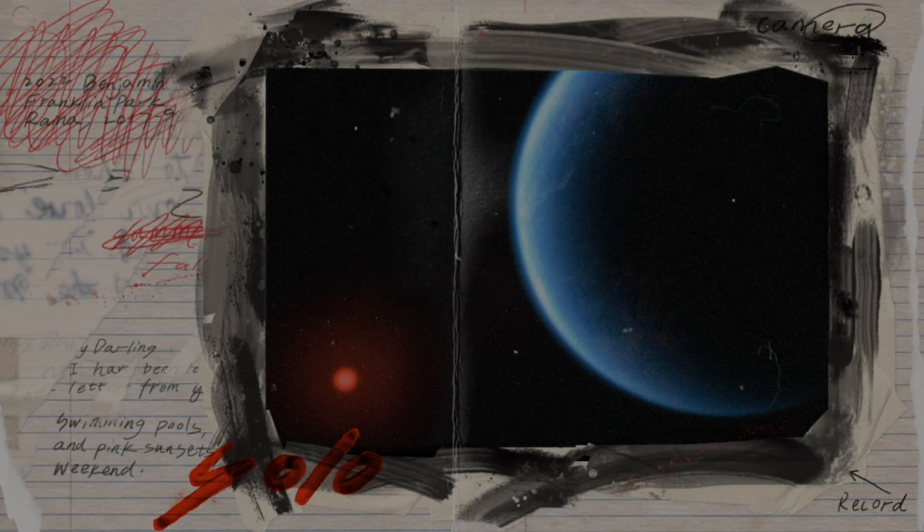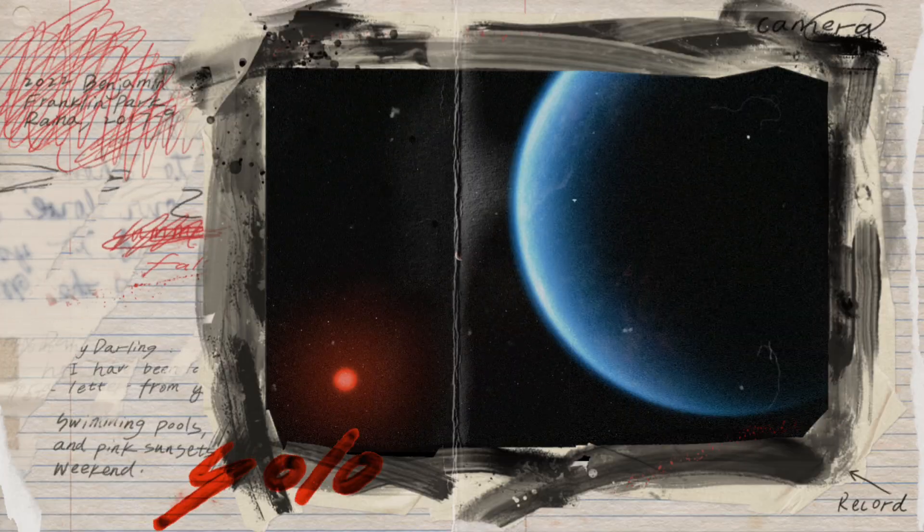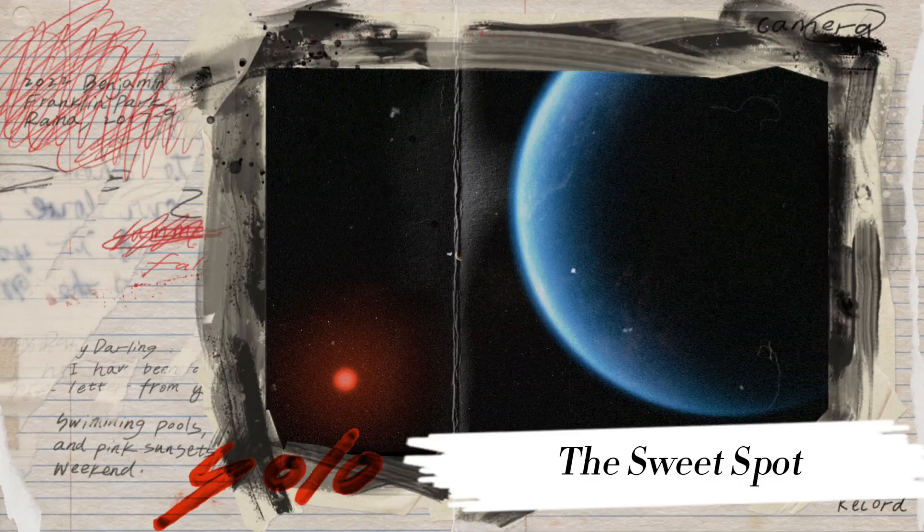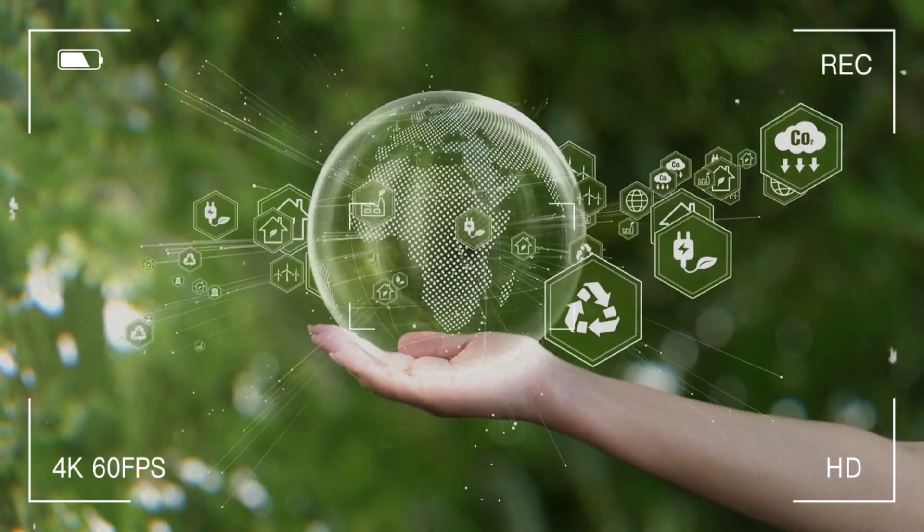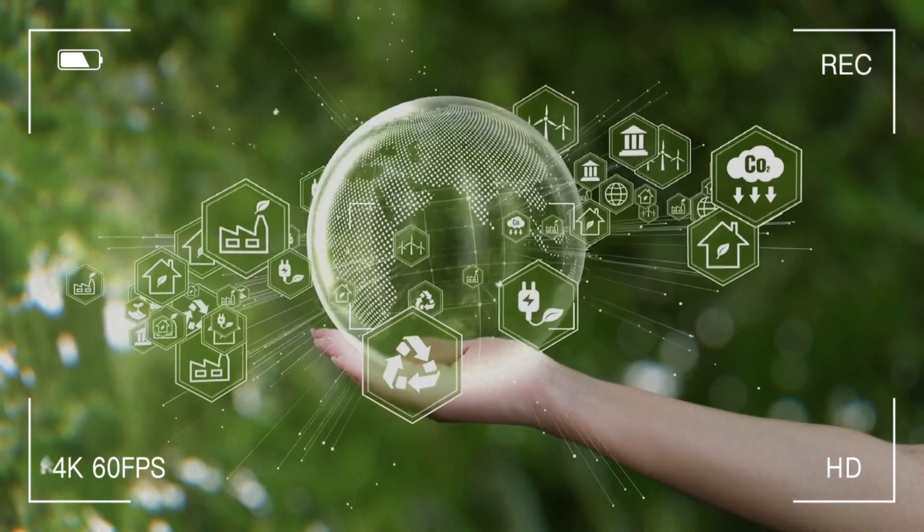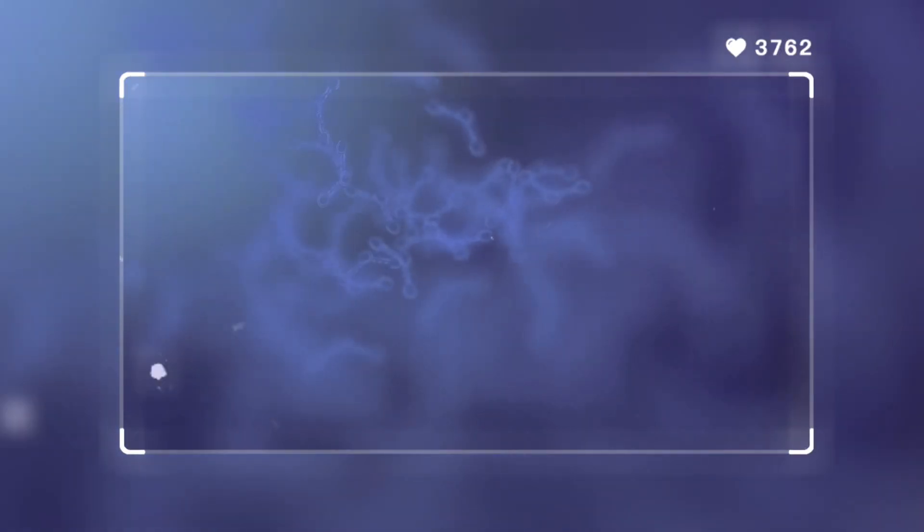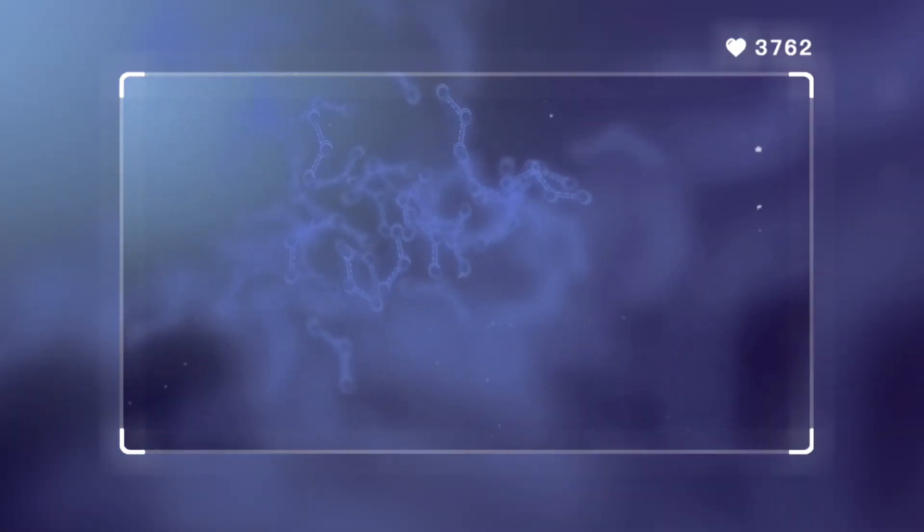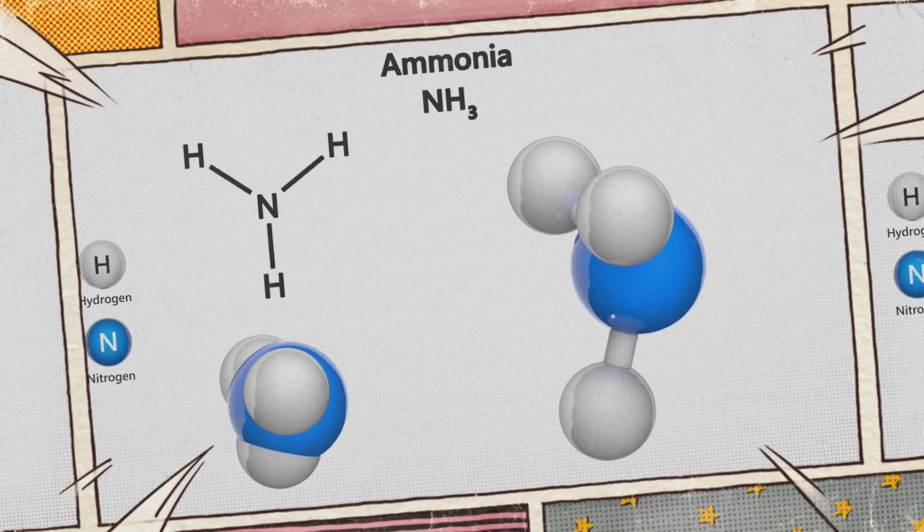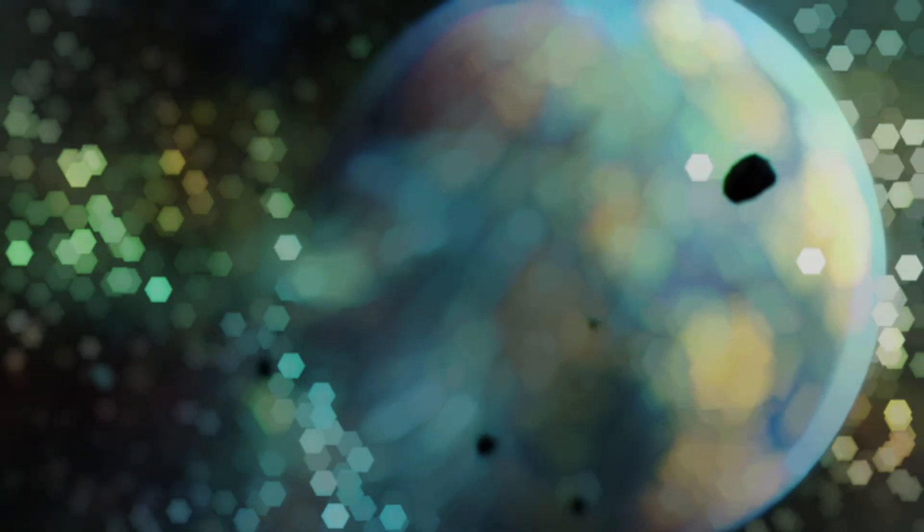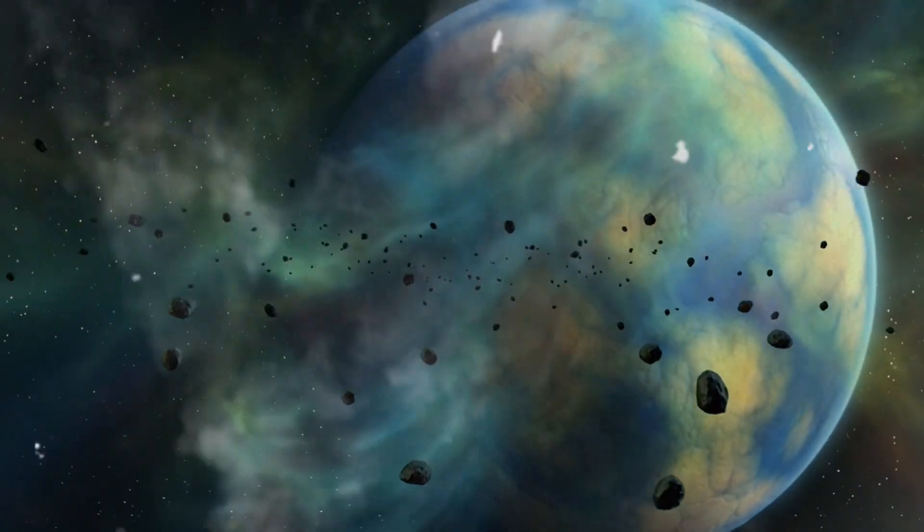In the case of K-218b, it occupies the habitable zone referred to as the sweet spot at a safe distance from its host star. Scientists posit that the temperature in this zone is conducive to supporting lifeforms. Furthermore, the substantial presence of methane and carbon dioxide, coupled with the absence of ammonia in its atmosphere, suggests the potential existence of water oceans beneath its hydrogen-rich atmosphere.